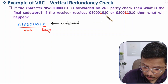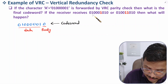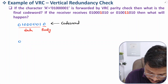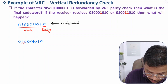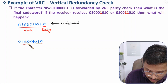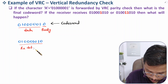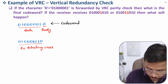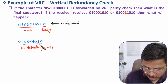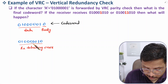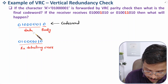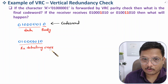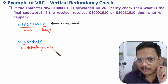Now let's see what happens when the receiver receives the data. In the first case, if the receiver gets this data, it counts the ones: one, two, three — three ones are there. Since there should be an even number of ones but there are an odd number, the receiver detects an error. The receiver knows there is an error in one bit, though it doesn't know which bit. The error bit is observable, and detection happened because of the one-bit error.